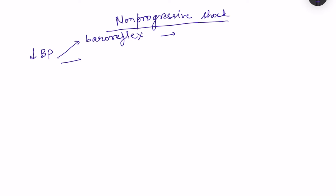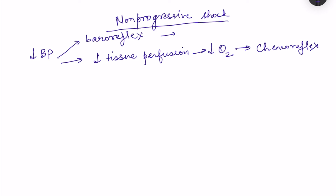Because of decreased blood pressure there is decreased tissue perfusion, which leads to decreased oxygen supply to tissues. Chemoreceptors detect the partial pressure of oxygen in the blood, so chemoreflex also responds. This is initiated at a mean blood pressure of 40 to 70 mmHg. These are the neural reflexes; hormonal mechanisms will also start.